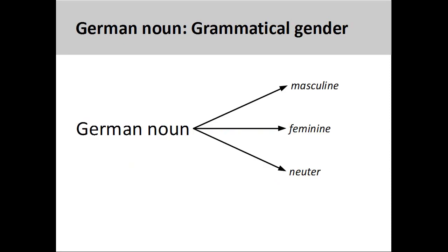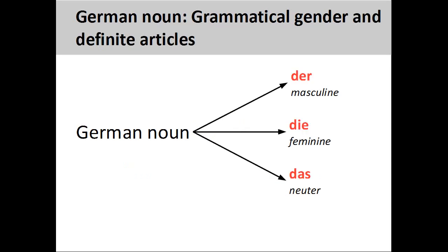Unlike an English noun, a German noun has a grammatical gender. It can be either masculine, feminine, or neuter. The grammatical gender can be related to the biological gender of the noun if it has one, but usually there is no connection. The grammatical gender of a noun is seen in its definite article. 'Der' indicates a masculine noun, 'die' a feminine noun, and 'das' a neuter noun.